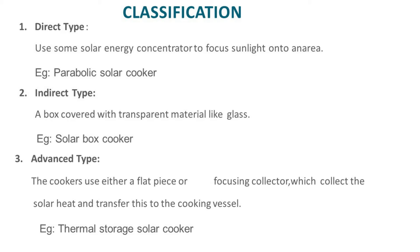An example of the direct type is the parabolic solar cooker. The second is the indirect type — it is a box covered with transparent material like glass, for example the solar box cooker. The third is the advanced type, where the cooker uses either a flat piece or focusing collector which collects solar heat and transfers it to the cooking vessel, for example the thermal storage solar cooker.